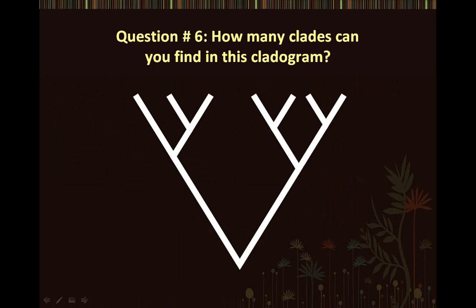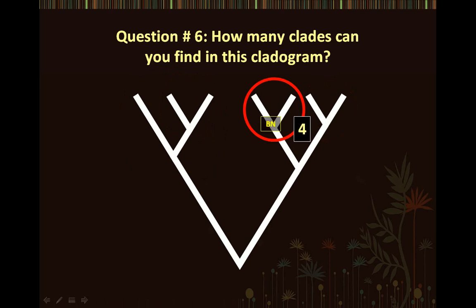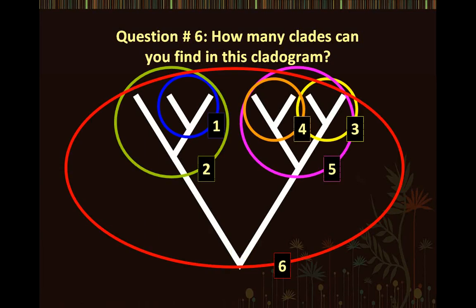Question number six: How many clades can you find in this cladogram? It actually depends on where you look. Keep in mind that trees can be nested within trees. Try to find as many as you can, and identify the basal nodes while you're at it. Here's a hint: there are more than three clades. The correct answer is that six different clades can be found in this cladogram, and the basal node for each is labeled as BN. Here is the first clade, the second clade, the third clade, the fourth clade, the fifth clade, and the sixth clade. So again, six different clades can be found on this cladogram.